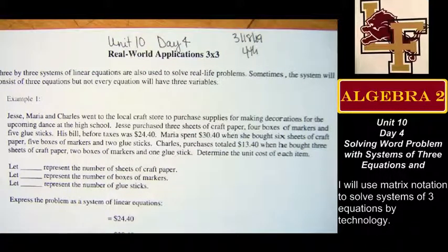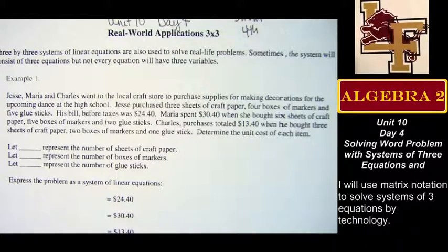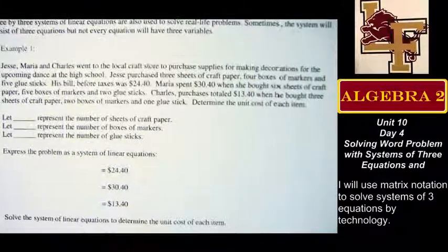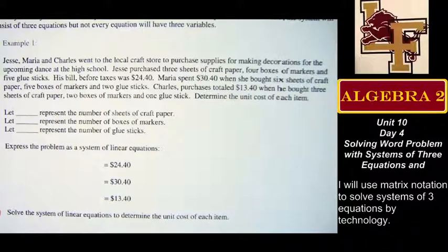So let's look at our first story. Jesse, Maria, Charles go to the local craft store. They're going to purchase supplies to make decorations because they're on the committee to decorate for prom. Jesse purchased three sheets of craft paper, four boxes of markers, and five glue sticks for his team. His bill was $24.40. Maria pays $30.40 — she gets six sheets of craft paper, five boxes of markers, and two glue sticks. And then Charles rolls in and only spends $13.40: three sheets of craft paper, two boxes of markers, and one glue stick. We've been asked to figure out how much each item costs — how much a single sheet of craft paper costs, how much a single box of markers costs, how much a single glue stick costs.